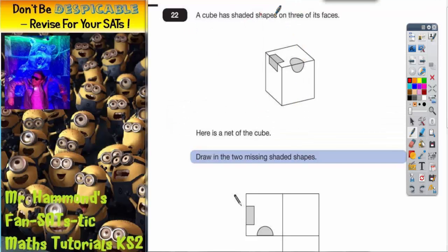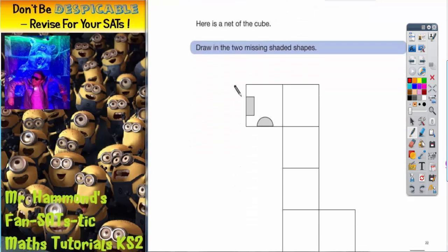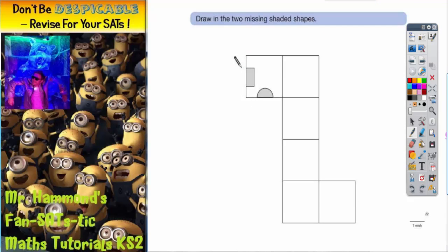Question 22. A cube has shaded shapes on three of its faces. So here we've got our cube and we've got these shapes. We've got a square and a circle overlapping across the edges. And we're given the net of the cube down here and we're asked to draw in the two missing shaded shapes.